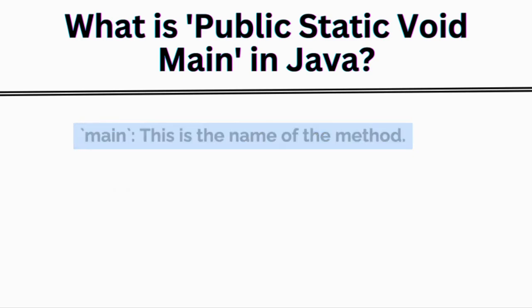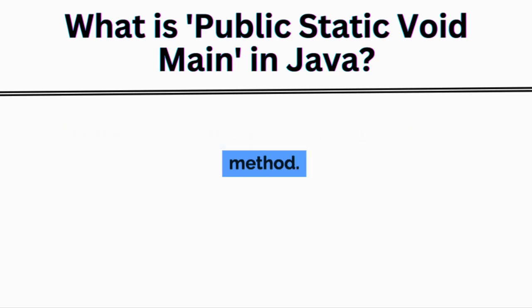Main is the name of the method. It's the identifier that you use to call the method.